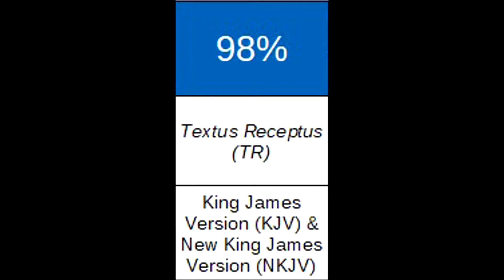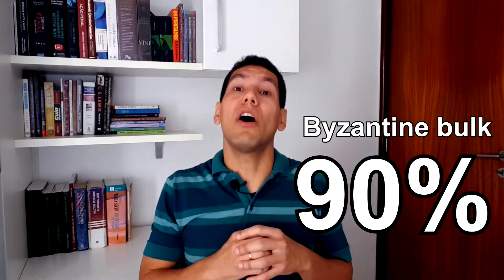At 98% in the graphic, we have the Textus Receptus. This text was used in the Protestant Reformation, so it is the Received Text or Textus Receptus. Any Bible that used the Received Text is 98% equal to Family 35 — a 2% difference. For instance, we have the King James Version and the New King James Version; these versions use the Textus Receptus for their New Testament translations. So these are the main English Bible versions that use the Byzantine tradition and its manuscripts, which correspond to 90% of all manuscripts.